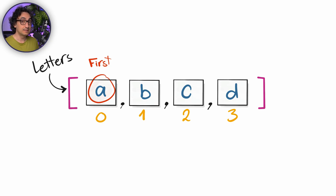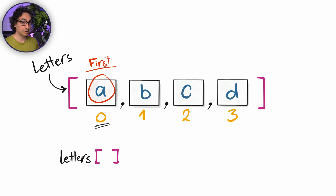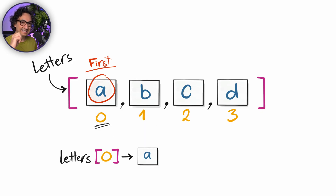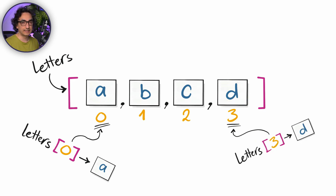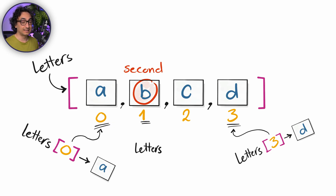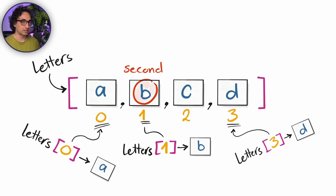To get the first item, you tell Python the index number using square brackets together with the variable name. Specifying zero between the square brackets, Python understands it needs the item in slot zero. To get the last item, specify index three and you will get d. Be careful: if you say 'second item,' that doesn't mean index two — the second item has index one, since we start from zero.